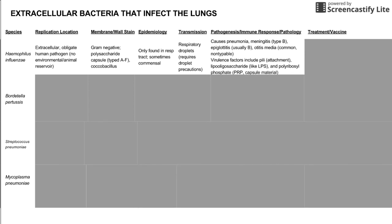Haemophilus can cause pneumonia, and it can also cause several other infections throughout the body, specifically meningitis, epiglottitis, and otitis media. Meningitis and epiglottitis are caused by the type B variant of the polysaccharide capsule — Haemophilus influenzae B, sometimes abbreviated HIB. Otitis media is a pretty common infection caused by non-typable Haemophilus influenzae.